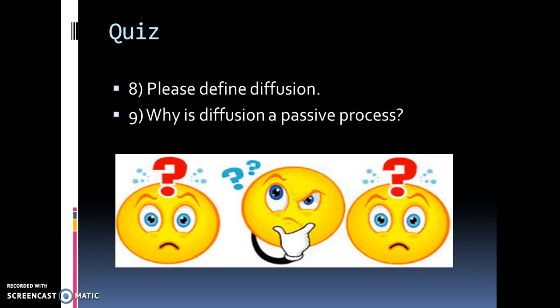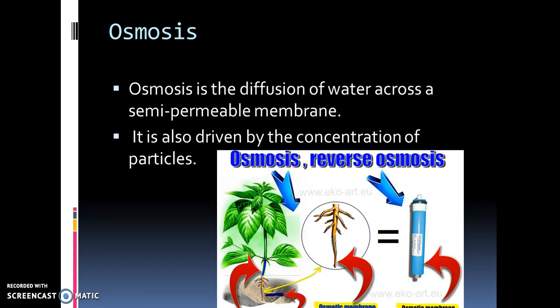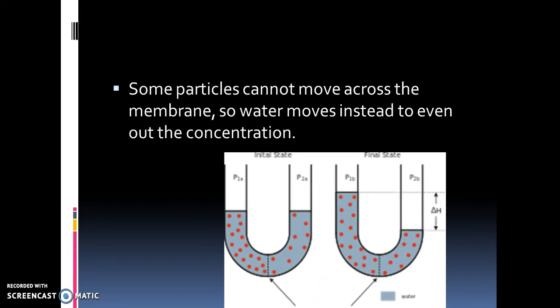Why is diffusion a passive process? Osmosis is the diffusion of water across a semi-permeable membrane — we're just talking about water moving, nothing else, just water. It is also driven by the concentration of particles known as solute. Sometimes particles cannot move across the membrane, so instead, water will move across the membrane to even out the concentration.